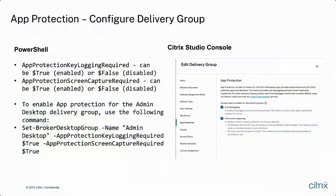Anti-key logging and anti-screen capture protection is configured at the delivery group level using either PowerShell or the Citrix Studio console. There are two properties on each delivery group that affect the behaviour of App Protection policies: the App Protection key logging required and the App Protection screen capture required values. To enable App Protection for an admin desktop delivery group, we would use the following PowerShell commands.